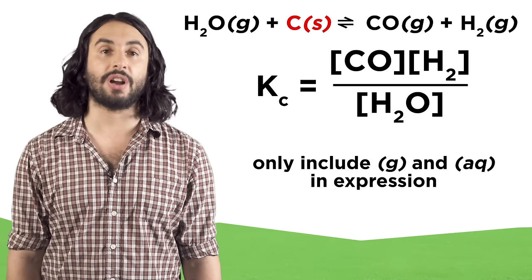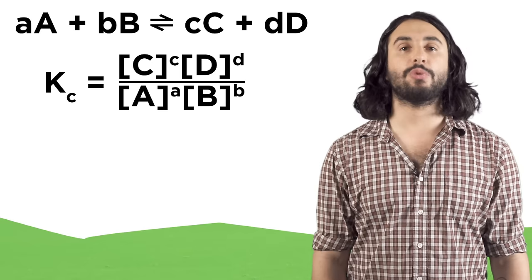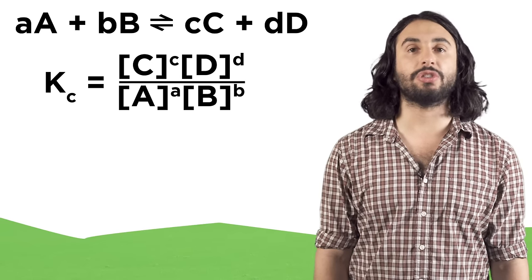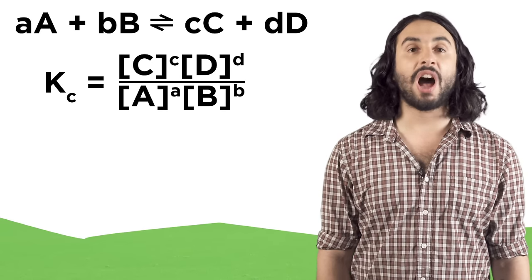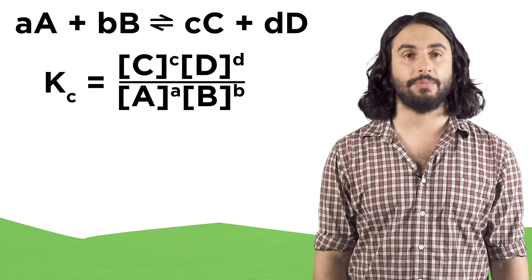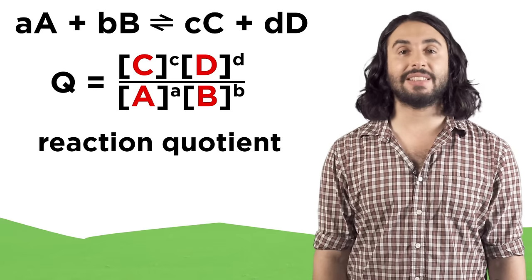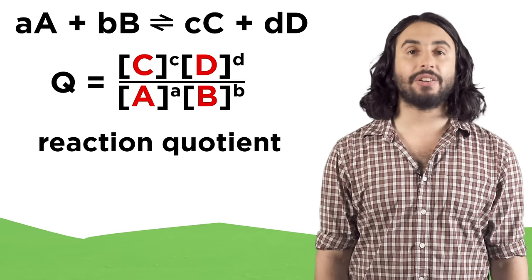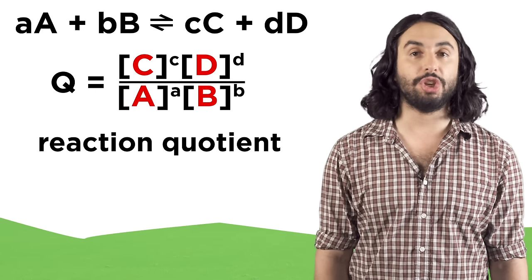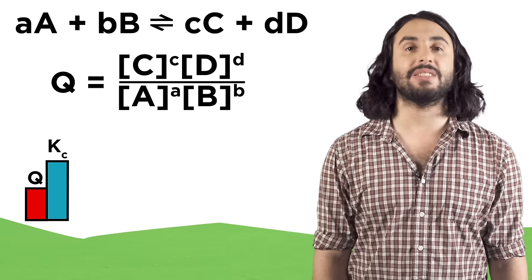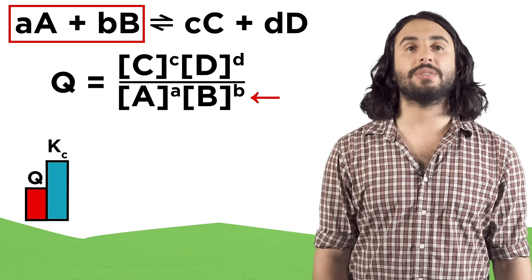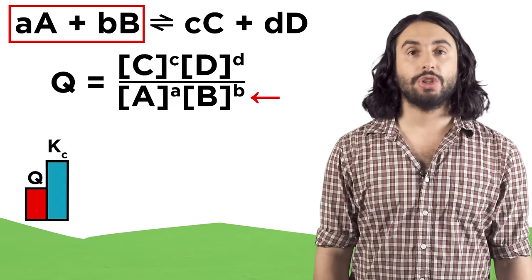Sometimes we may want to predict which way a mixture will go given some non-equilibrium quantities. To do this, we plug the non-equilibrium values into the Kc expression to calculate the reaction quotient Q. If Kc is bigger than Q, Q is more on the reactant side, so it'll make more products to equilibrate. If Kc is less than Q, it'll make more reactants to equilibrate. When Kc equals Q, the system is at equilibrium.